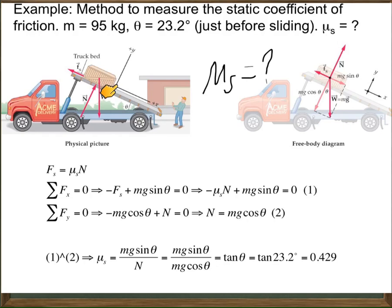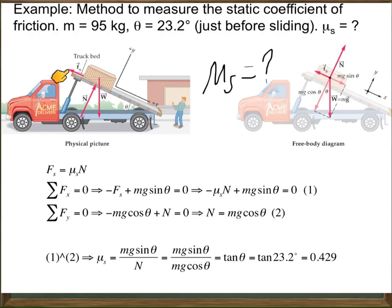What are the forces acting on the load in the x-direction? There is the frictional force, which will prevent the load from going down — so the frictional force will be in the upward direction along the surface. The static frictional force is always in the direction that opposes the motion of the object. If the object tends to move down, the frictional force will be in the opposite direction. With x chosen as downward, fs is minus.